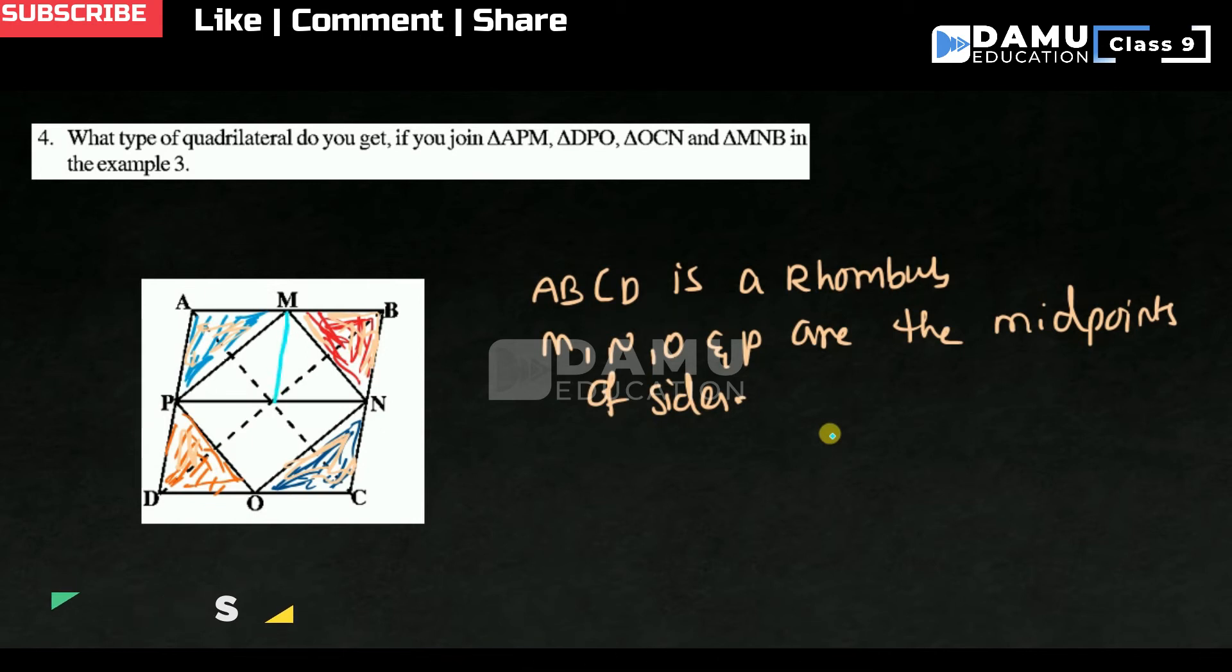This is the triangle OCN. So if you join like this, what are we getting? This is OC, so OCN. Then if you join another triangle here, what is that?